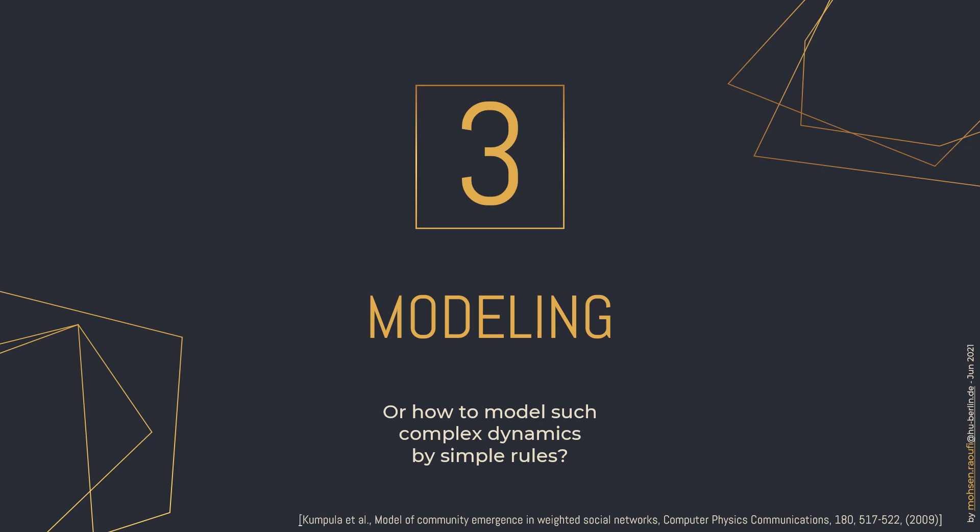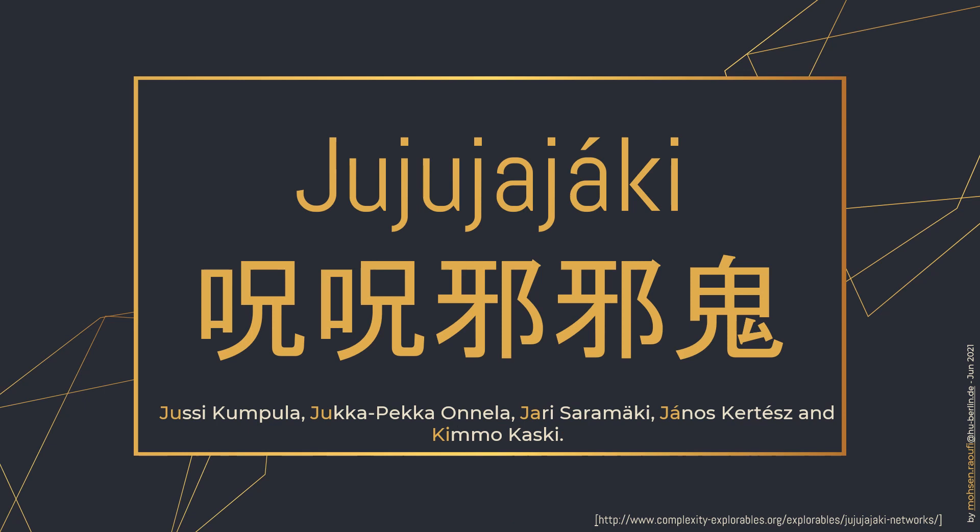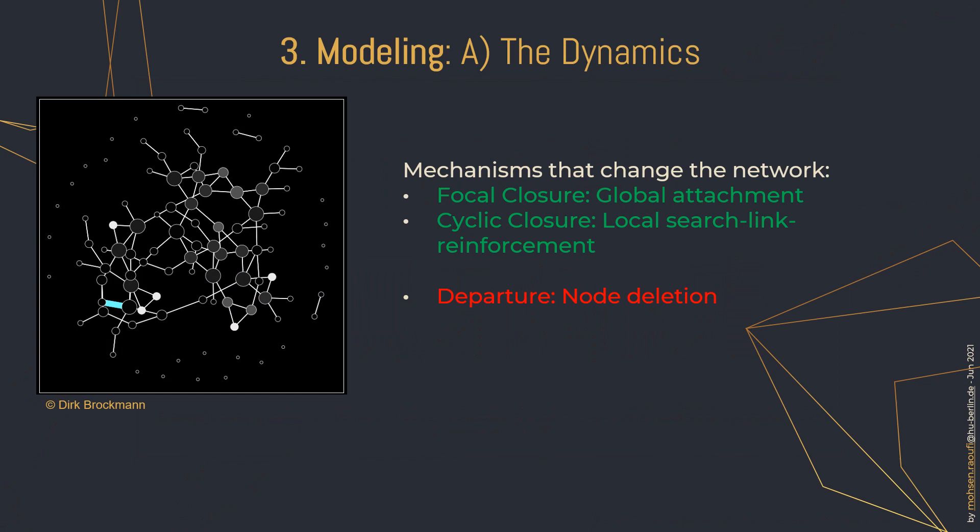Although this story sounds a little bit awkward, and the actual processes taking place in the formation of social relations are undoubtedly very complex, sociology research has shown that they can be modeled by simple mechanisms. A group of researchers interested in this idea modeled the dynamics of complex networks. The names of the researchers start with similar-sounding letters that, when put together, form the name Jujujujaki — whose translation from Japanese, according to Google Translate, means 'curse evil evil demon', which doesn't sound very relevant to the idea. But anyway, let's see how they modeled that dynamic with simple rules.